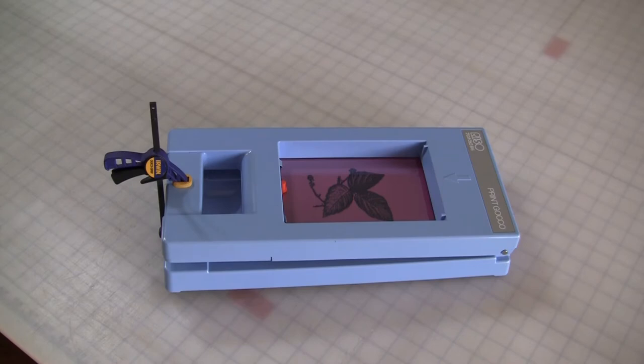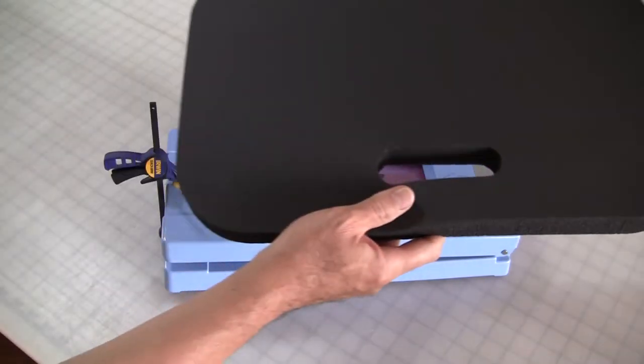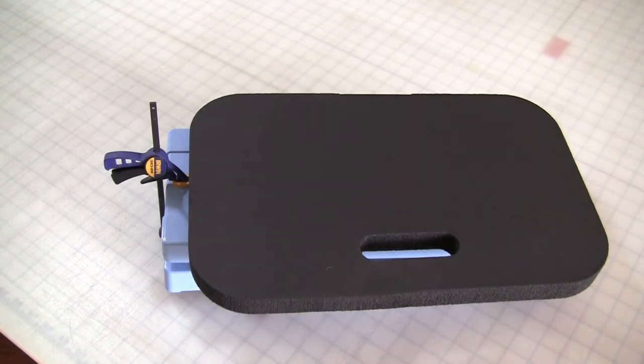Now to expose. I'll use sunlight first. Completely cover the window with a light-blocking material. I'm using one of those knee-saving garden pads.